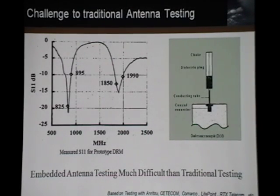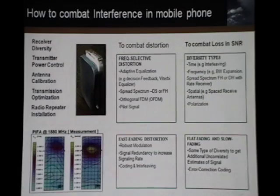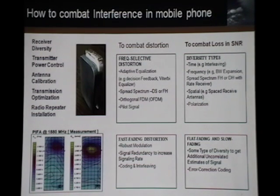Let's look at the challenge of traditional antenna testing. Embedded antenna testing is much different from traditional testing, because the antenna is embedded inside the handphone without standing out, so the testing tools are totally different. Also, how to combat interference in mobile phones is important — we have to combat distortion, combat loss in SNR, and there are several issues there.